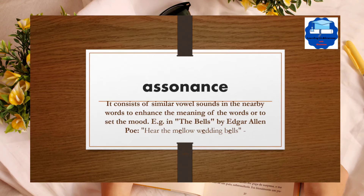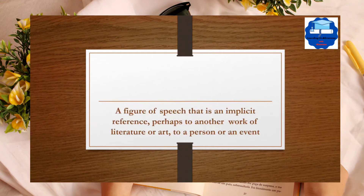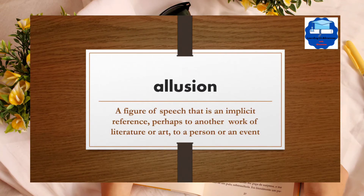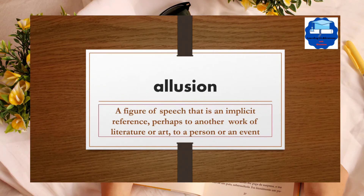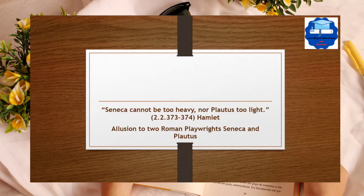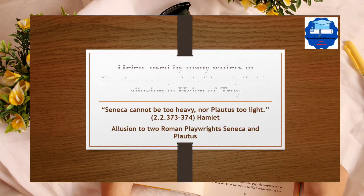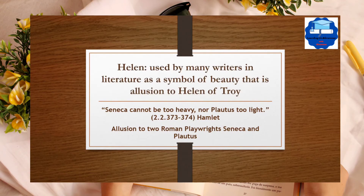Allusion is a figure of speech that is an implicit reference — perhaps to another work of literature or art, to a person, or to an event. For example, the reference to Helen is used by many writers in literature as a symbol of beauty. That is an allusion to Helen of Troy.